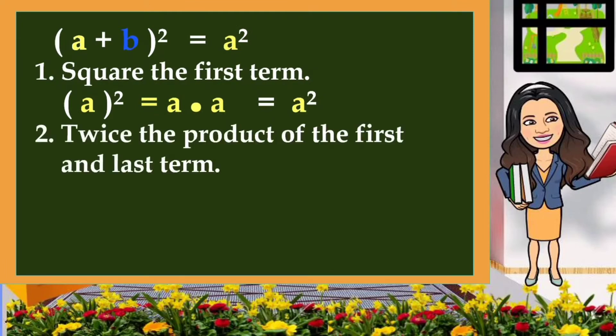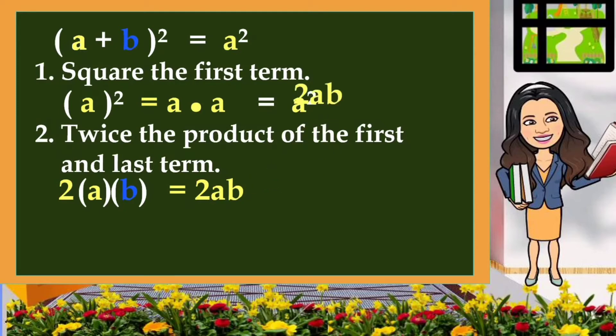The second step is twice the product of the first and last term. That means 2 times the first times the last. And what is 2 times a times b? That is equivalent to 2ab. And that is our second term of the result. Since that is positive, we're going to write a plus sign to separate the terms.